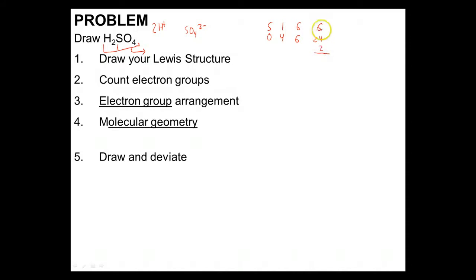Now, I've got my 32 electrons to work with. So I have 32 electrons. Sulfur is my least electronegative. It's going to be in the center. All of my oxygens around it.